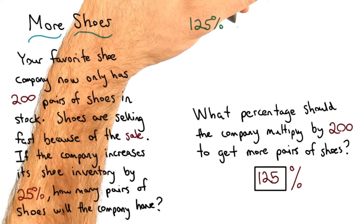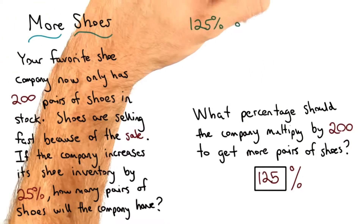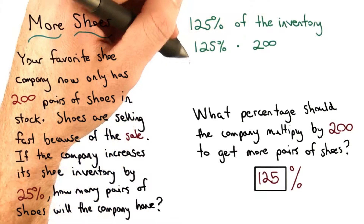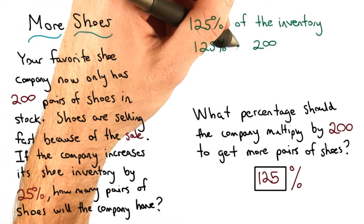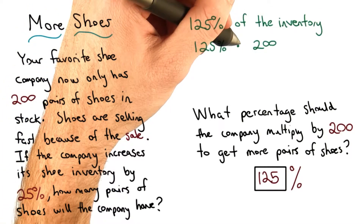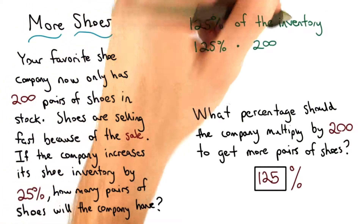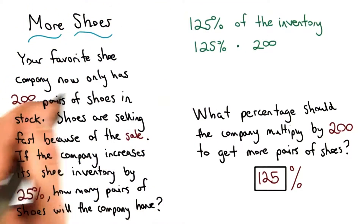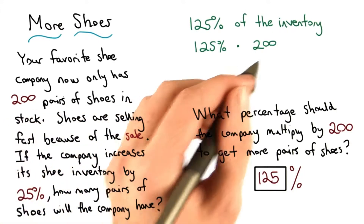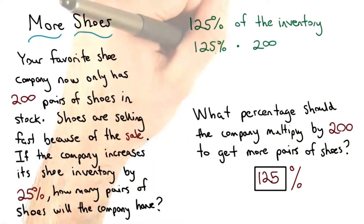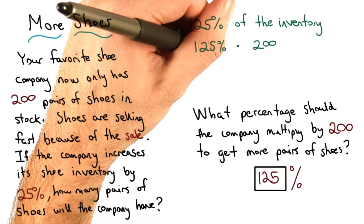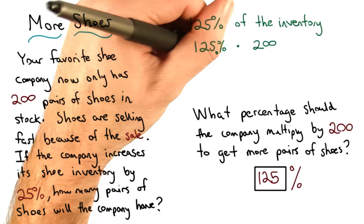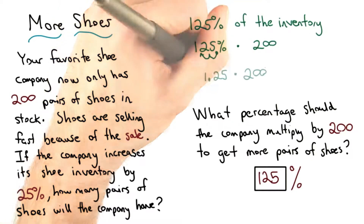I want to take 125% of the inventory, so I have 125% of — that's times — the inventory, which is 200 pairs of shoes from my company. I know percent means divide by 100, so I move the decimal place two places to the left.